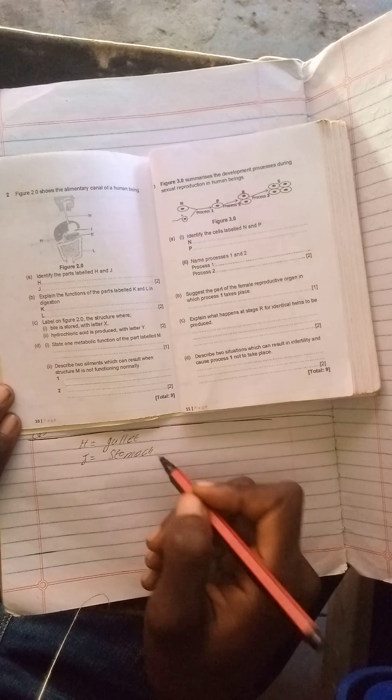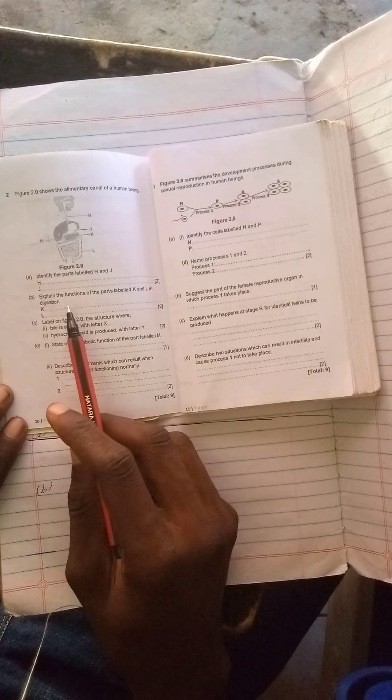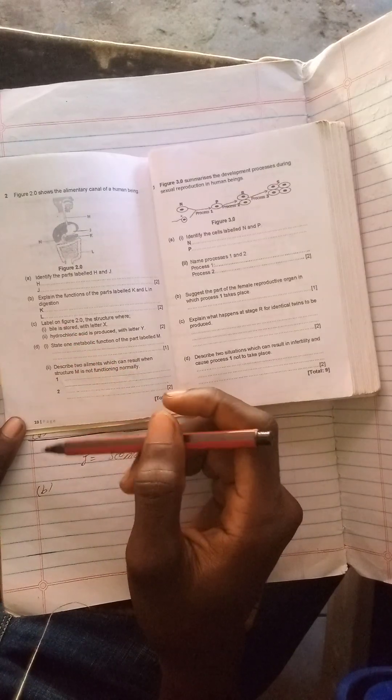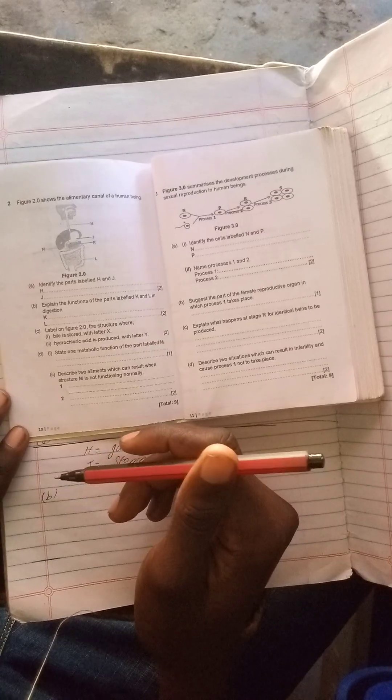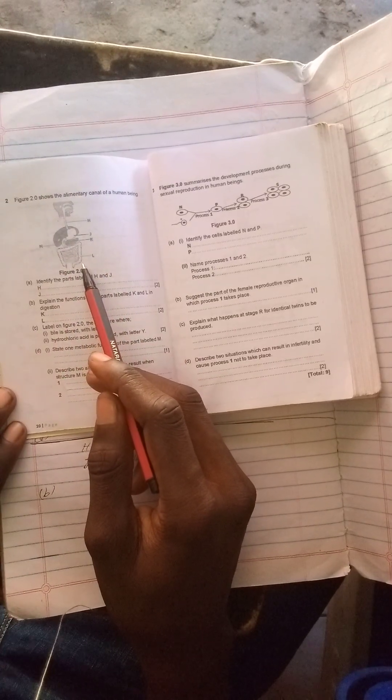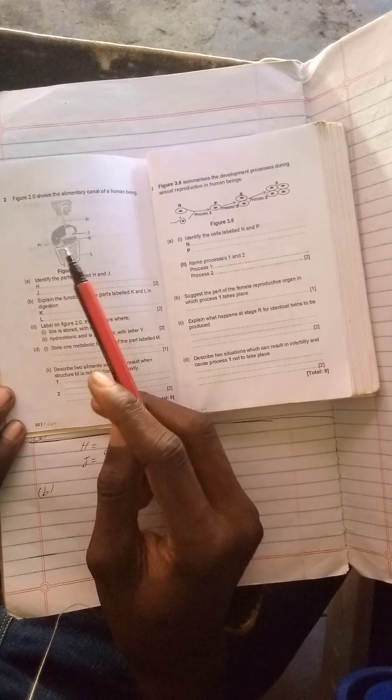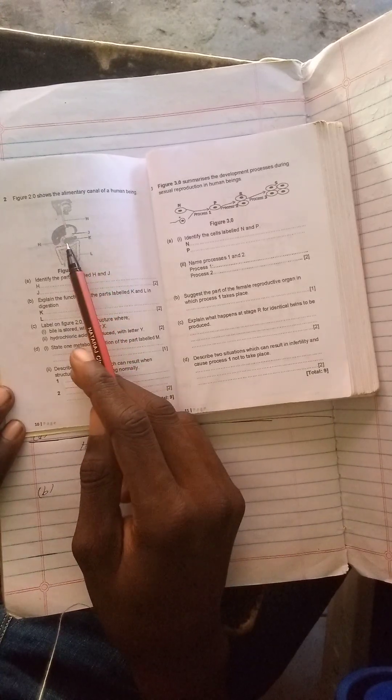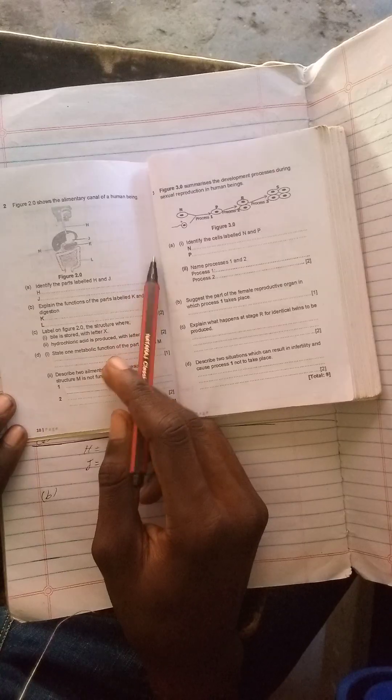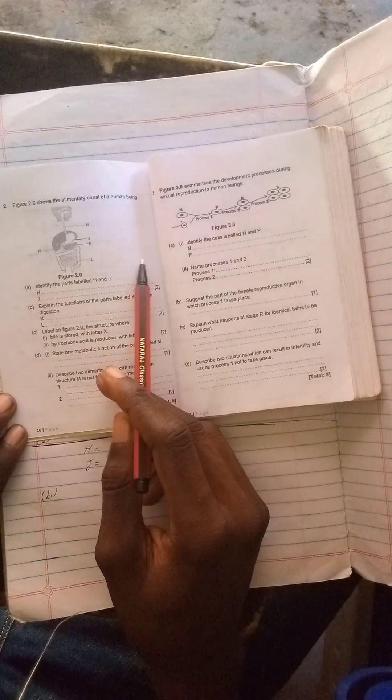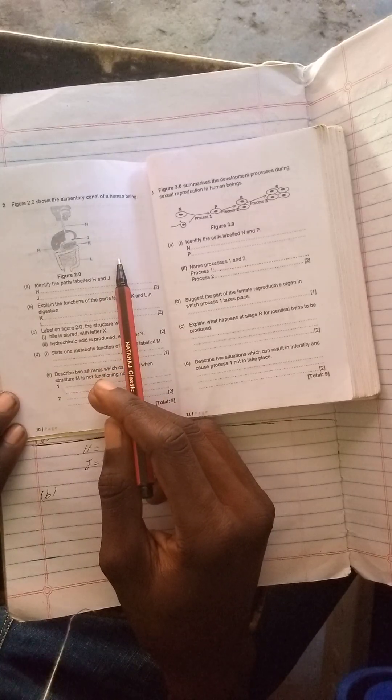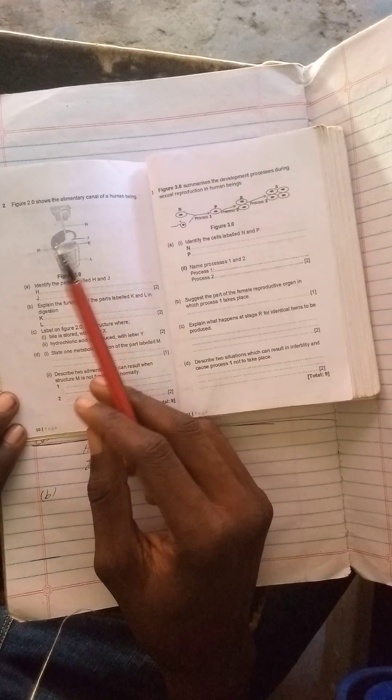Question B reads: explain the function of the parts labeled K and L in the digestion system. Part K is important - first identify the parts before you explain their functions. Looking at the diagram, K is pointing at the pancreas and L is pointing at the large intestine. The function of the pancreas in the digestive system is to produce pancreatic juice, spelled P-A-N-C-R-E-A-T-I-C, which contains digestive enzymes.